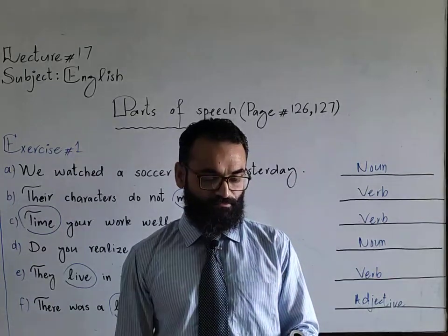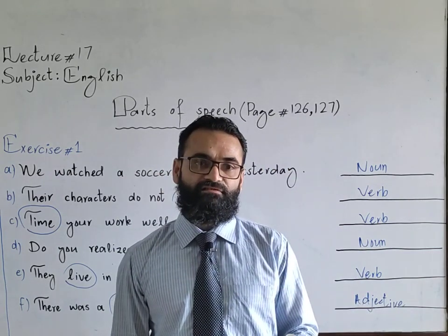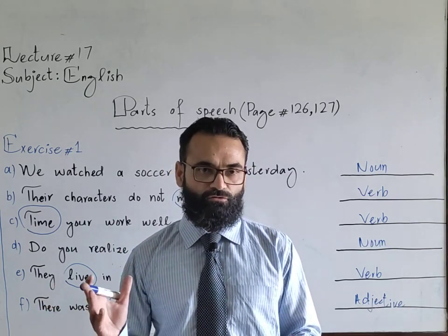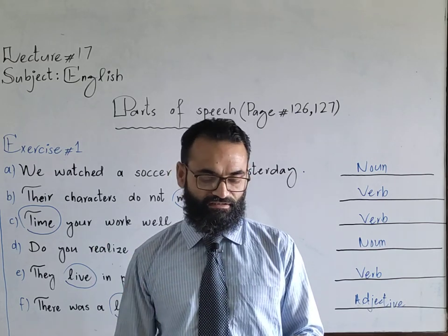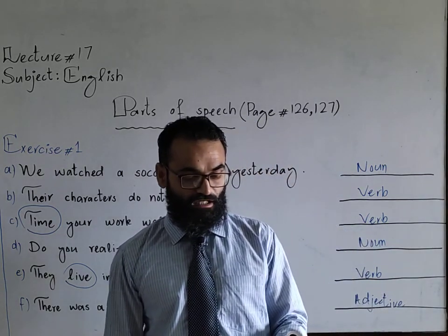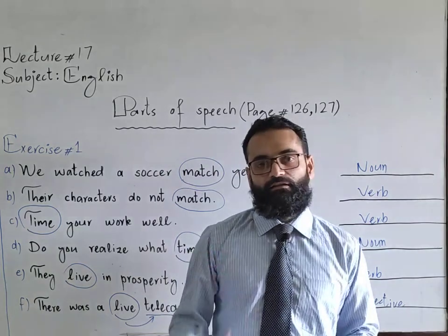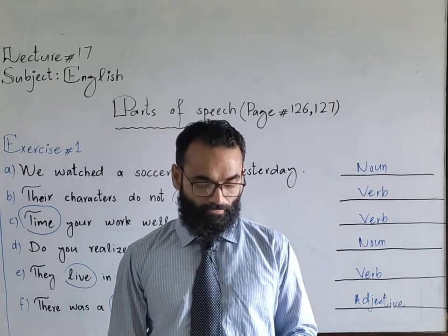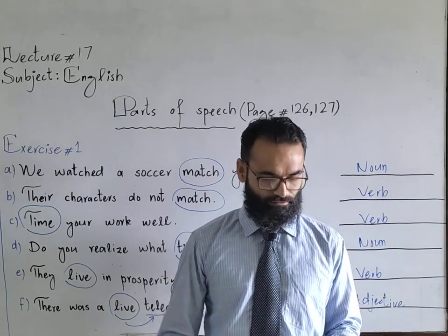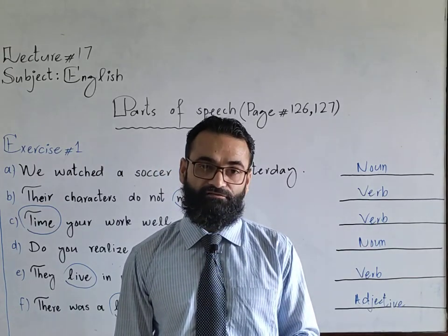Turn to sentence D: 'The fisherman returned with a big catch.' In this sentence, 'big' is in bold print. Just look at the next word — 'catch' — it is a noun. Any word that describes a noun becomes an adjective. So draw a line and write that 'big' is used as an adjective. Turn to sentence E: 'Well, did you have a good time?' Remember, when a sentence starts with 'well', these are called interjections because they show sudden feelings and emotions. So 'well' in bold print is your interjection. Draw a line in front of it and write interjection.